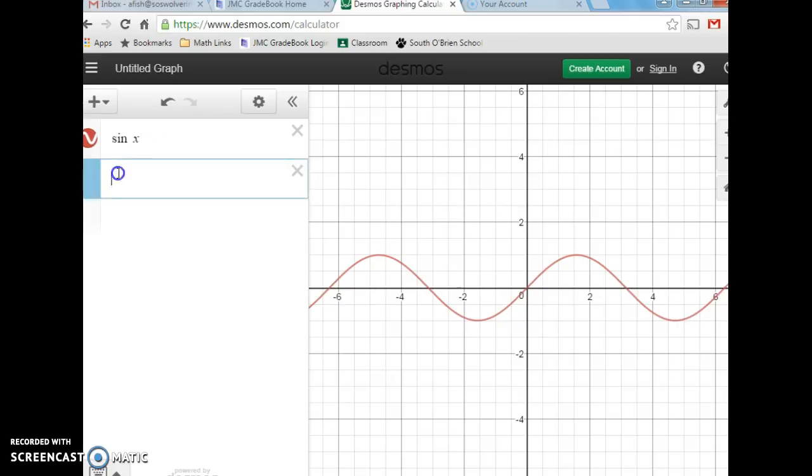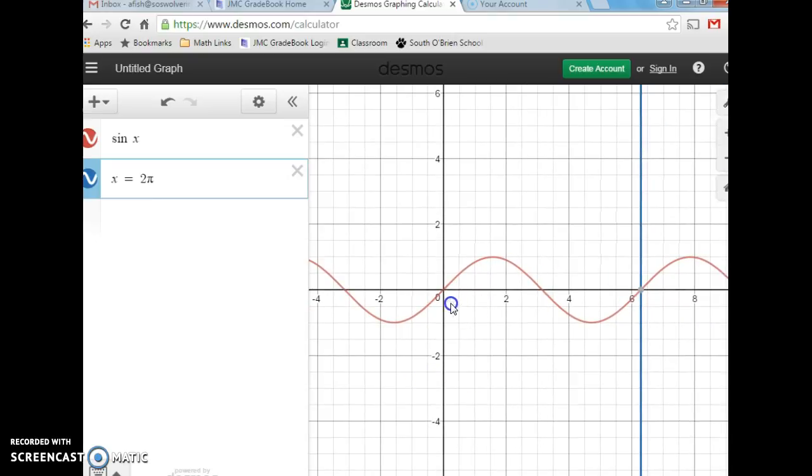Okay, so if I were to say x equals 2π, notice here that I've gone through one whole wave function. So this is based on radians, and remember that 0 to 2π gives you the full 360. And this is what our values are based on.